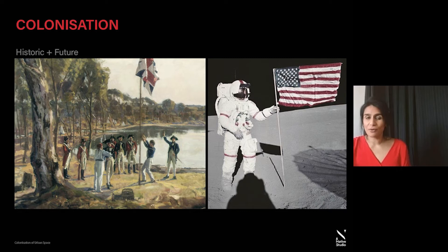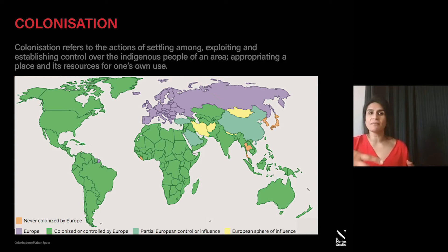By examining and deconstructing the forms and processes involved in colonization, we can begin to understand its wider impact on individuals and how this extends into our urban spaces. We may then start to ask questions about the urban spaces that might truly challenge the legacy of colonization and its effect on our ambition to create equitable, accessible spaces for all. Firstly, if we look at what it means to actually colonize: colonization refers to the actions of settling among, exploiting, and establishing control over the indigenous population of an area, appropriating space and its resources for one's own use.